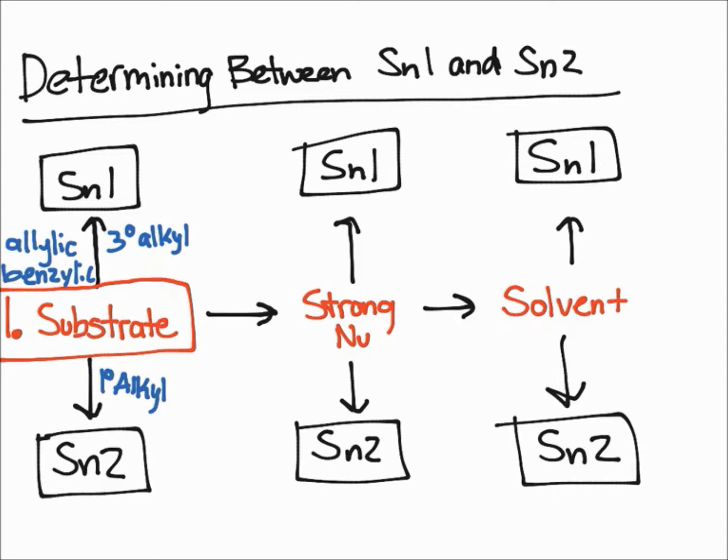If it's a primary alkyl group, remember that it only has the carbon bonded to one other carbon, so there's a lot of room for the nucleophile to come in and attack. As a result, if it's a primary alkyl group, it's going to undergo an SN2 reaction.